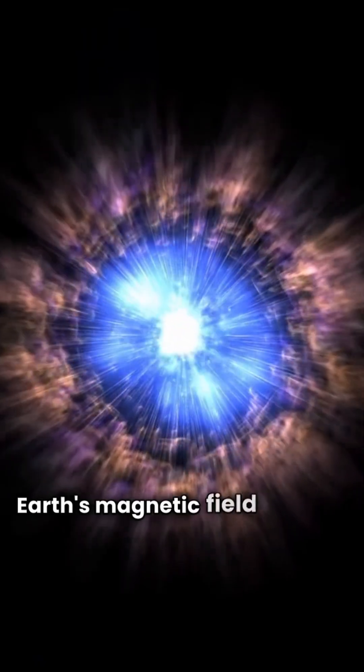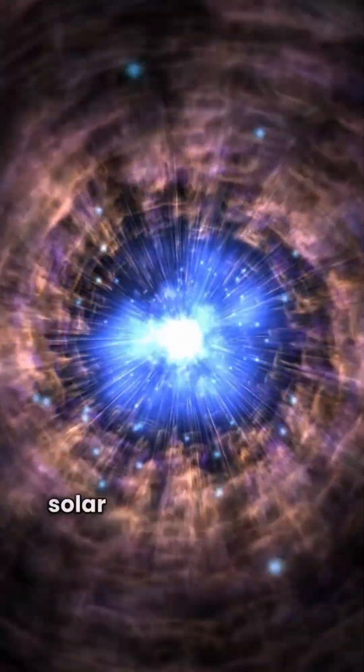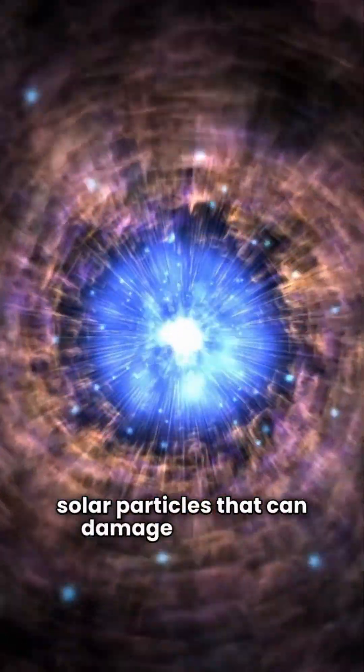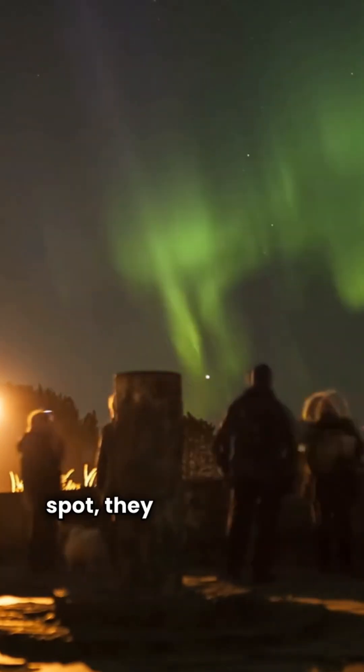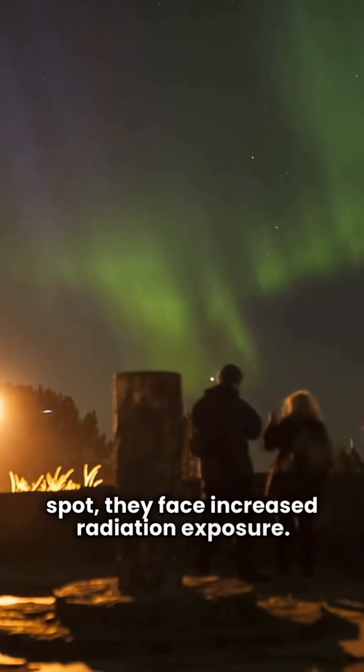Earth's magnetic field protects us from harmful solar particles that can damage satellites. As spacecraft fly over this weak spot, they face increased radiation exposure.